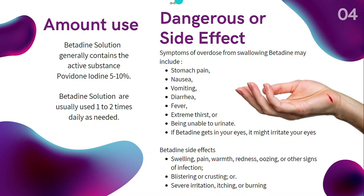On the fourth page there is information about the amount of use of Betadine and its dangerous side effects. Betadine solution generally contains the active substance povidone iodine at 5–10%, and is usually used 1–2 times daily as needed. Symptoms of overdose from swallowing Betadine may include stomach pain, nausea, vomiting, diarrhea, fever, extreme thirst, or being unable to urinate. If Betadine gets in your eyes, it might irritate them.